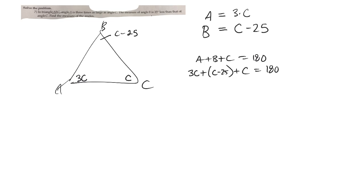So I can just collect like terms and solve. So 3C, 4C, 5, so it would be 5C minus 25 equals 180. So 5C equals 205, divide by 5 and C is going to be equal to 41.